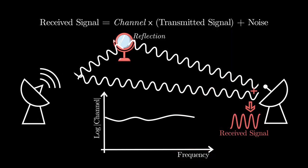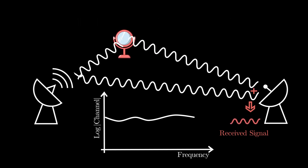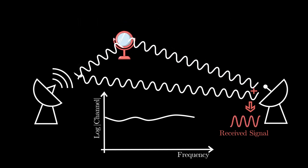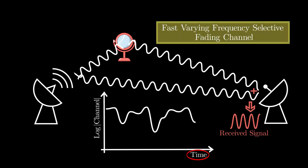If transmitter, or receiver, or surrounding objects are moving, then the received signal strength can vary. That is, the channel becomes time-varying. This type of channel is called fast-varying frequency-selective fading channel.